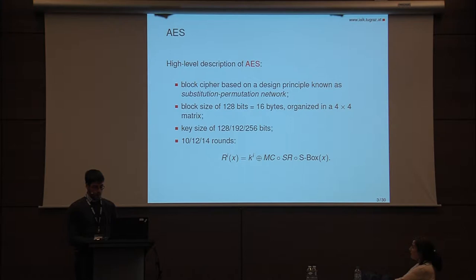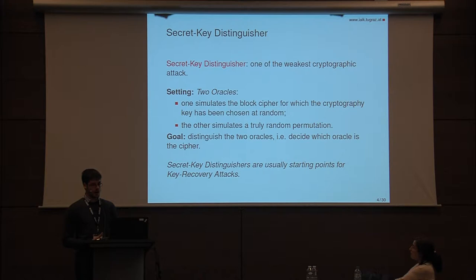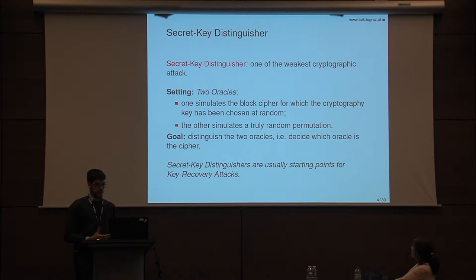I would like to recall the definition of a secret key distinguisher. A secret key distinguisher is one of the weakest cryptographic attacks. There are two oracles: one simulates the block cipher for which the cryptographic key has been chosen at random, and the other simulates a truly random permutation. The goal is to decide which oracle is the random permutation and which is the cipher. Secret key distinguishers are important because they provide theoretical argumentation about the security of a block cipher — a block cipher must look like a pseudo-random permutation — and because they are usually a starting point for key recovery attacks.